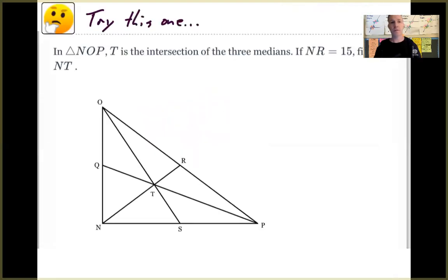Let's look at this one. So why don't you try this one on your own? I'm going to read it. In triangle NOP, T is the intersection of the three medians. If NR equals 15, find NT. So this whole line segment here equals 15, and we need to find NT. So why don't you pause the video and see if you can solve that on your own, and then I'll show you how I did it.